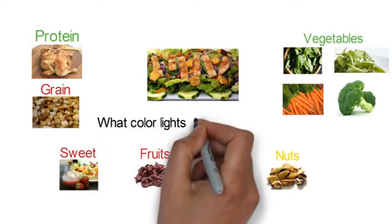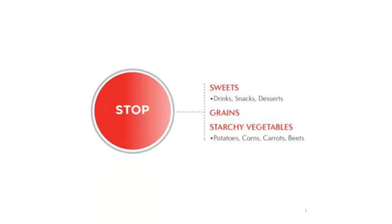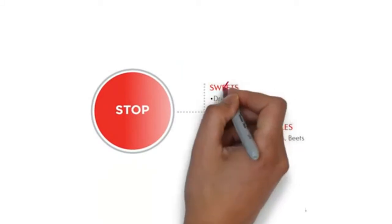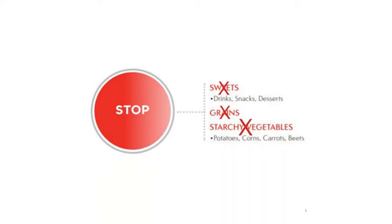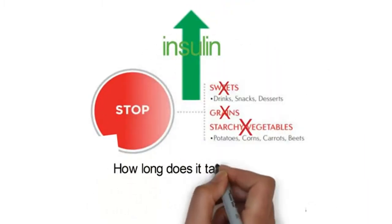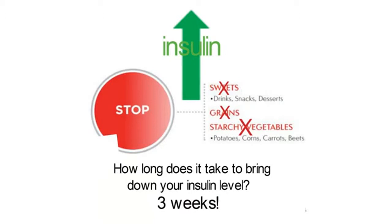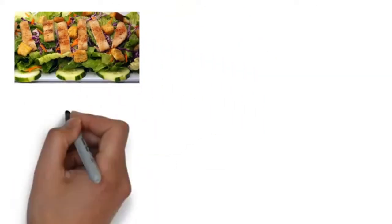After you identify all the individual ingredients, it's important to ask what color light each one belongs to, because understanding the color light system will help you understand whether or not these foods will increase your insulin. The first thing you want to do is avoid any red light food — red light foods will spike your insulin. Even a single bite can spike it, and it takes about three weeks to bring your insulin level back down.